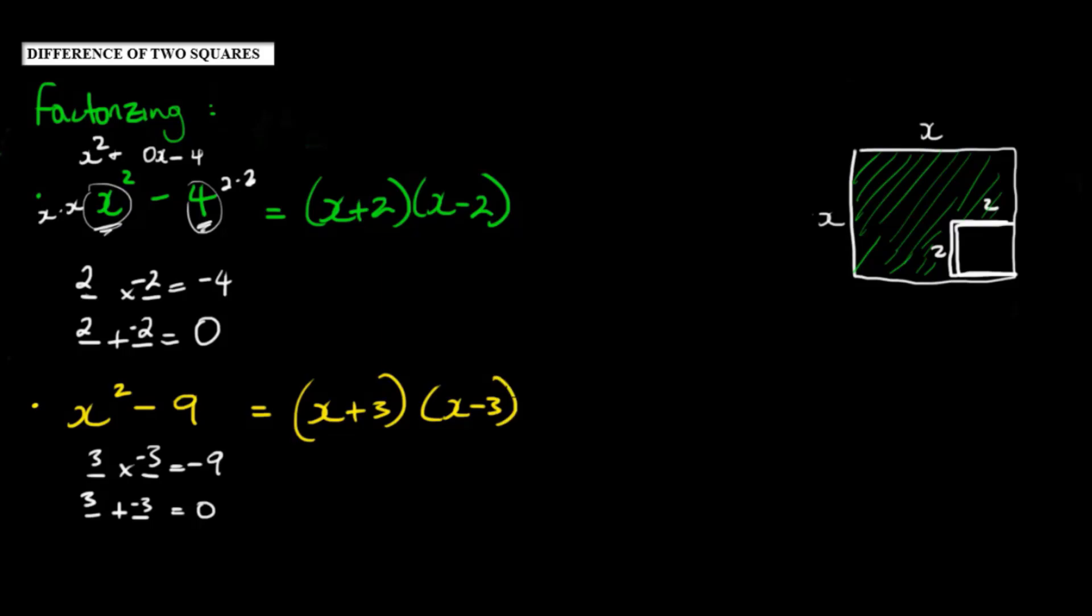Now what do you notice? When factored, we're multiplying the sum of their roots. In this case, the root of x squared would be x, and the root of 4 would be 2.